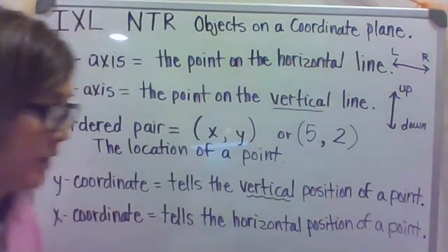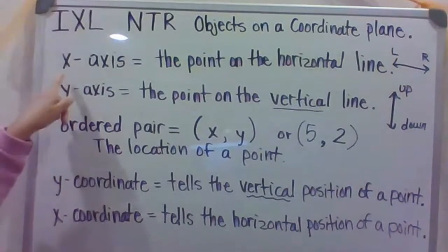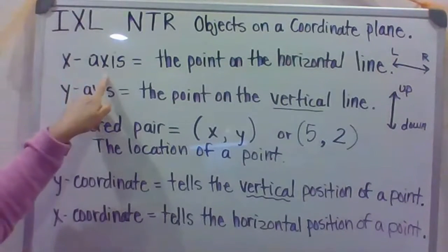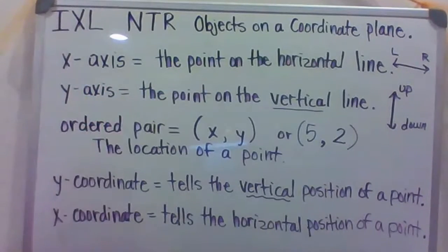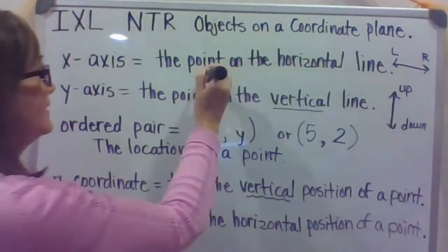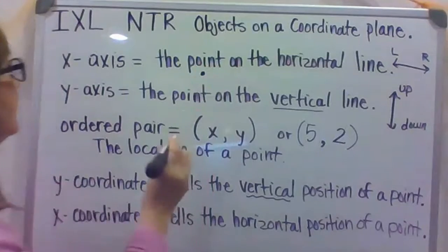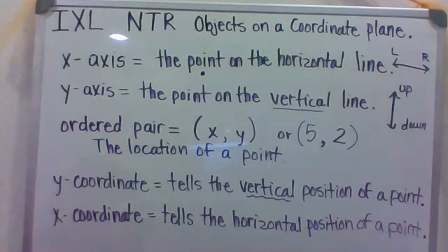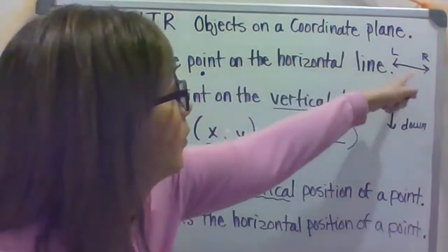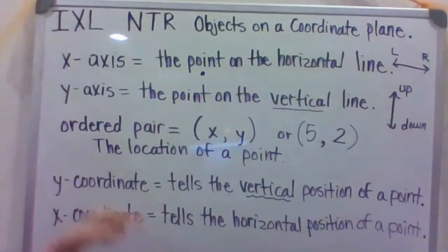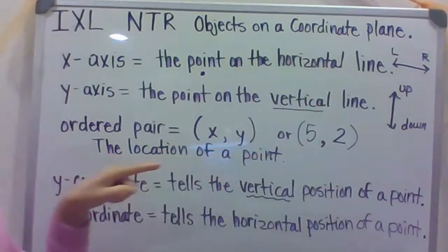Some of the terms you'll need to know is X-axis. So an X-axis is the point, which will be just a dot basically. The X-axis is the point on the horizontal line, and I've drawn a horizontal line, so it's going back and forth left to right. This is horizontal.